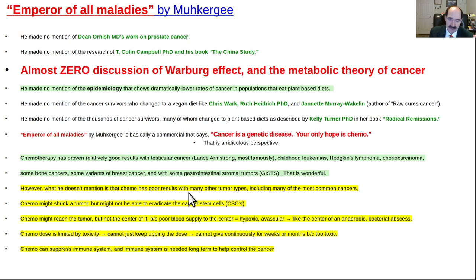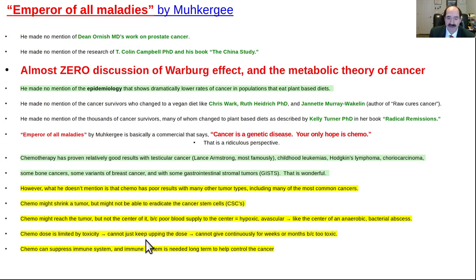But he doesn't talk about the problems with chemo. It can suppress the immune system when you might need that immune function. It might eradicate most of the tumor — even 99% of it — but not be able to get the cancer stem cells, leading to recurrence of a potentially more aggressive tumor. Sometimes a tumor will have very poor blood supply to its center such that chemo can't reach it because it's relatively hypoxic and avascular — like the center of an anaerobic bacterial abscess. The metabolic theory shows cancer can behave like an anaerobic bacteria. Chemo is also limited by toxicity; you can't keep increasing the dose or continuing for weeks or months because it's too toxic.